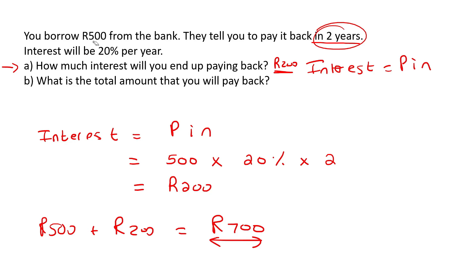When you borrow money from the bank, they will always make you pay more back because they add interest — that is how the banks make their money. They say, "Here's 500 rand, but you're going to give us 700 rand back." Makes sense, right? They're not going to give you 500 rand and then just get 500 rand back — then they're not making any money.